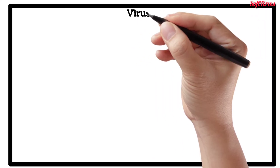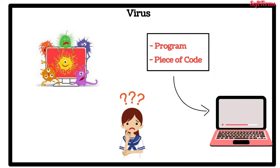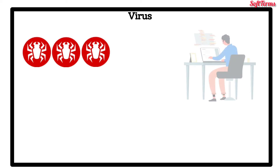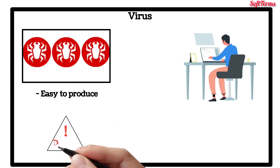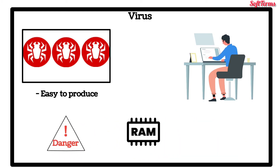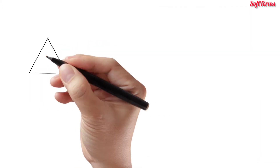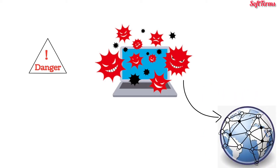Starting with Virus: a computer virus is a program or piece of code that is loaded onto the computer without the user's knowledge and runs against their wishes. Viruses can also replicate themselves. All computer viruses are man-made. A simple virus that can make a copy of itself over and over again is relatively easy to produce. Even such a simple virus is dangerous because it will quickly use all available memory and bring the system to a halt. An even more dangerous type of virus is one capable of transmitting itself across a network and bypassing security systems.